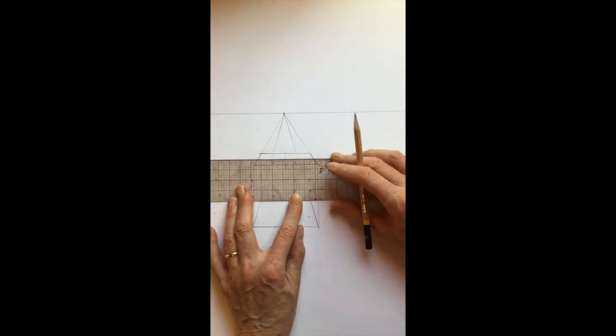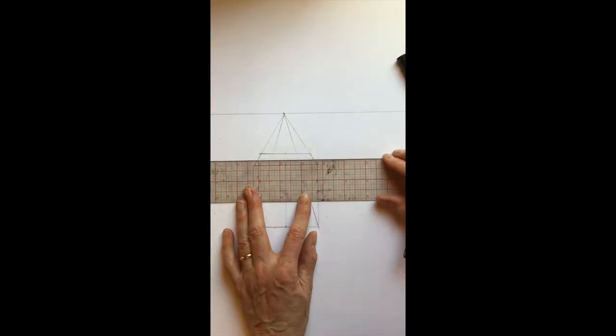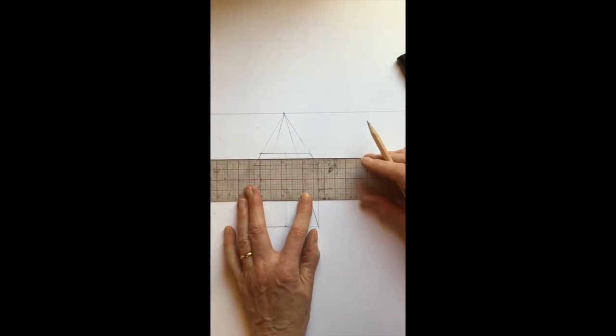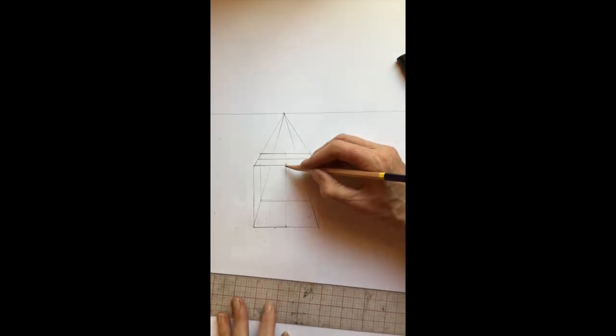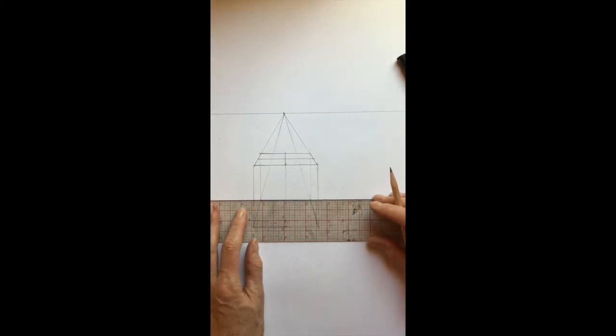Following those three rules will give you really good ellipses. Just doing a little correction here. What I'm doing is creating a little grid inside of the plane.